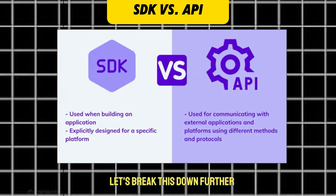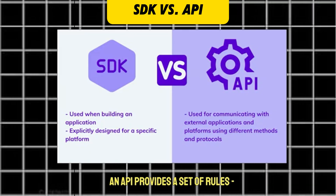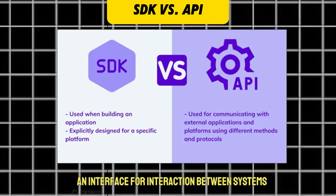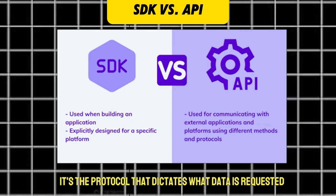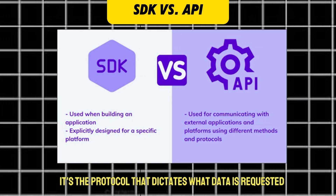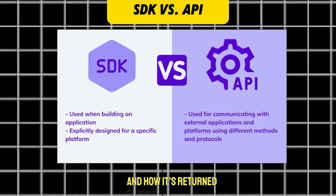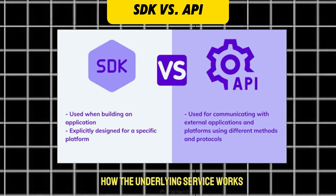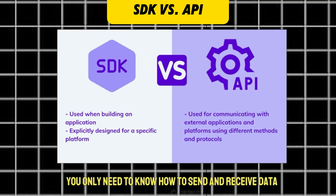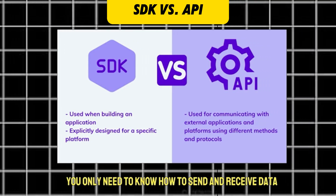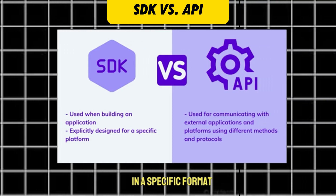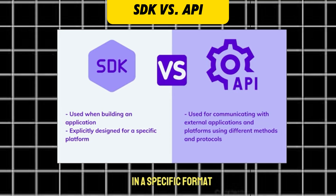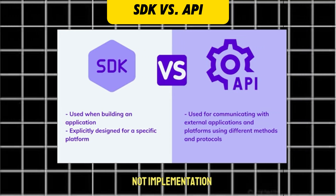Let's break this down further. An API provides a set of rules, an interface for interaction between systems. It's the protocol that dictates what data is requested and how it's returned. You don't need to understand how the underlying service works — you only need to know how to send and receive data in a specific format. APIs are about communication, not implementation.